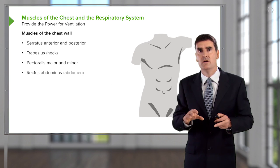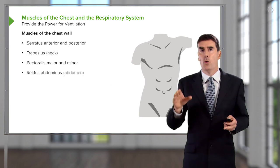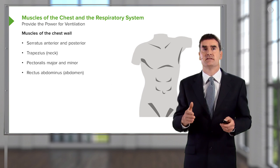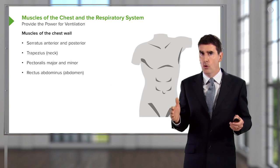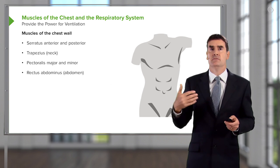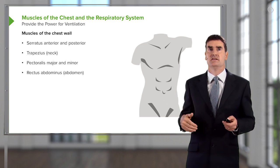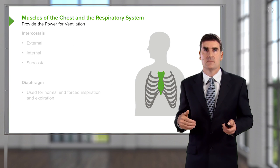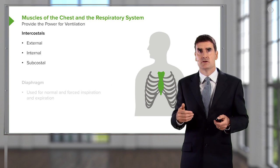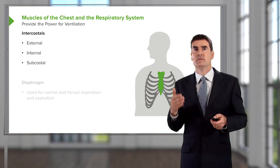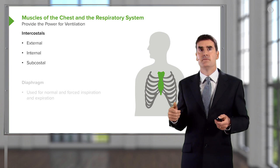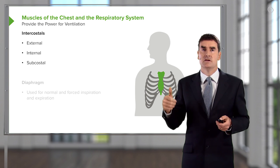They are all involved in respiration when you're having forced respiration, such as when you're exercising, or if you have such severe lung disease that you need to maximize your ventilatory capacity. The second set of muscles that are important are the intercostal muscles, which run between each rib.